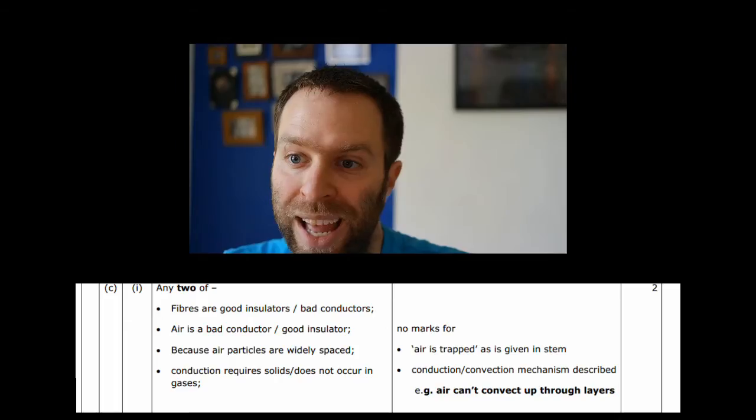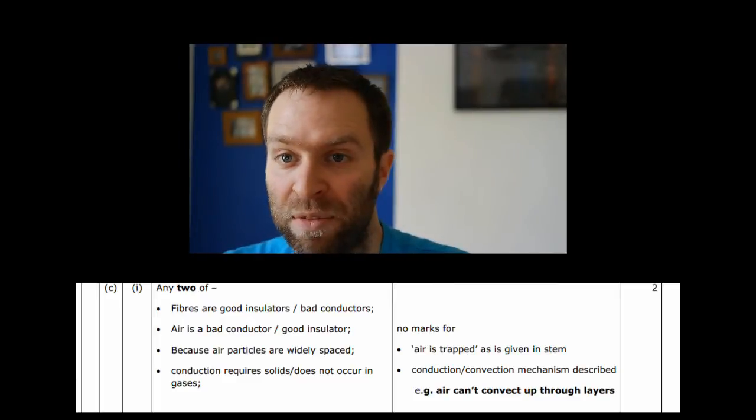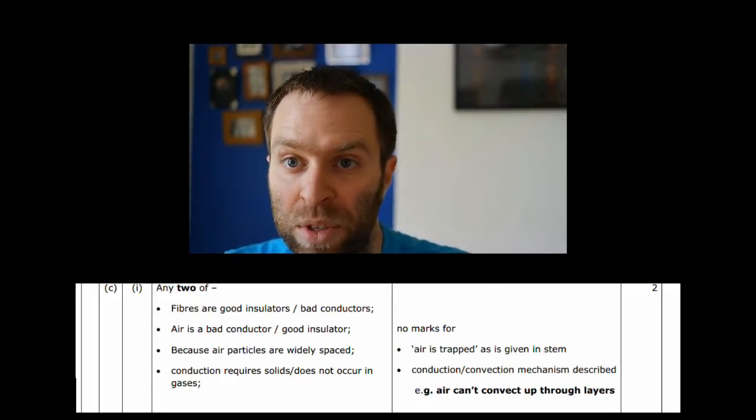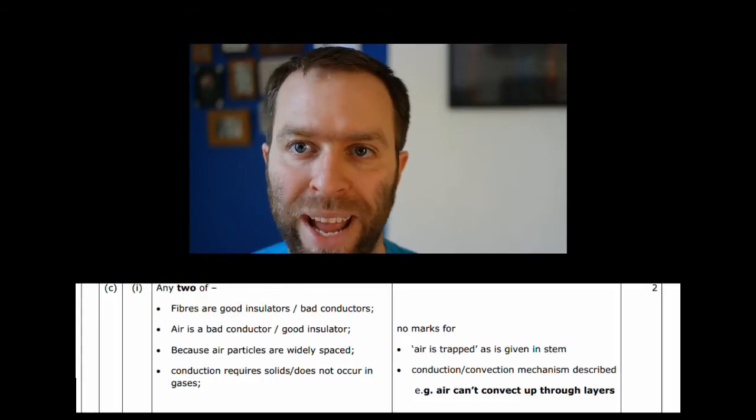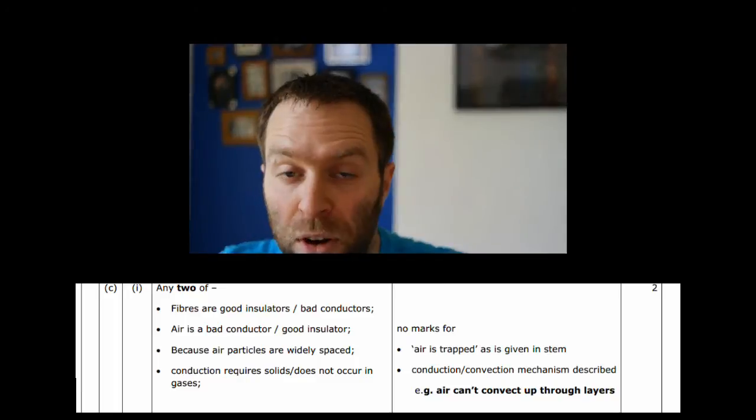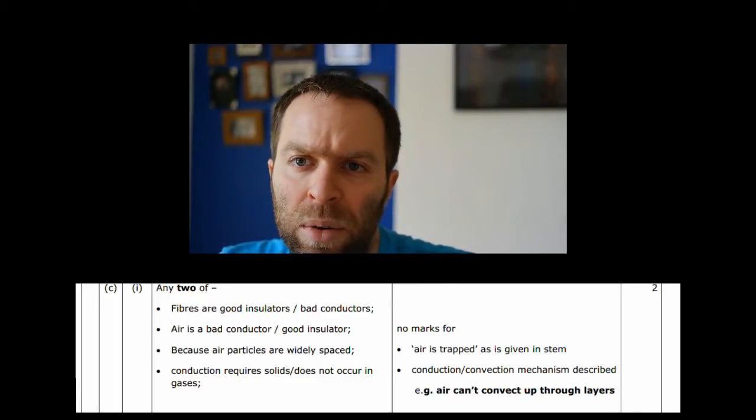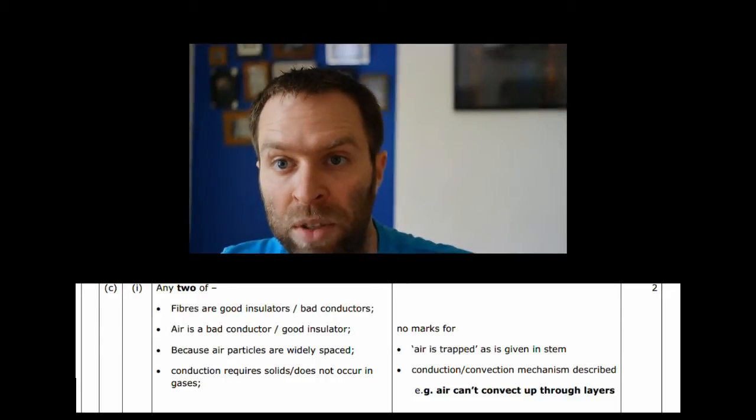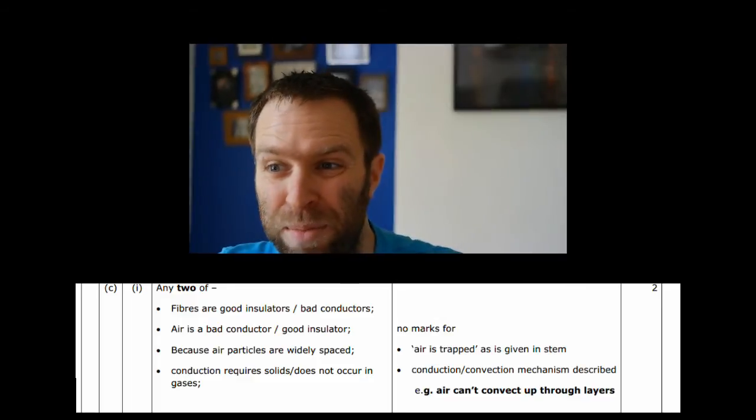The big things to talk about are the idea that air is a poor conductor or good insulator. There's fibers in there and the fibers are also really poor conductors and good insulators. You could then talk about why air is such a good insulator - particles are far apart, that sort of thing. Also that conduction happens best in solids, so that's why trapped air is good because trapped air is not a solid. You could also talk about the fibers maybe not being metal because metal is a good conductor.